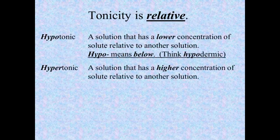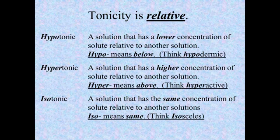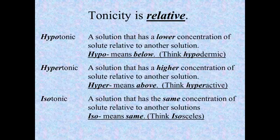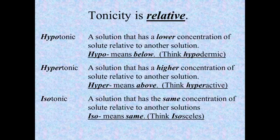This is a quick review of some terms that were discussed in the last vodcast. Hypotonic — hypo, of course, meaning below or lower. Hyper, meaning above. So hypertonic refers to a solution that has a higher concentration of solutes than something else. Hypotonic refers to something that has a lower concentration of solutes. And isotonic means that it refers to two solutions which have the same tonicity or the same concentration of solute in them.